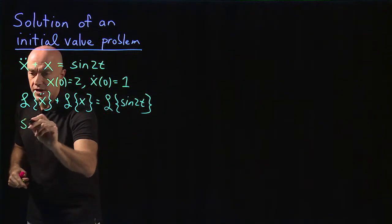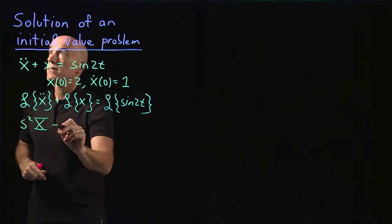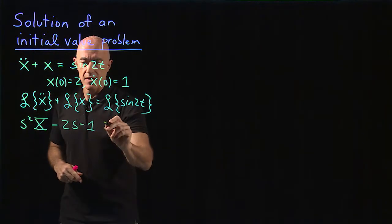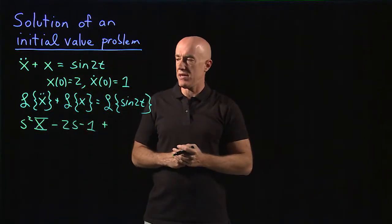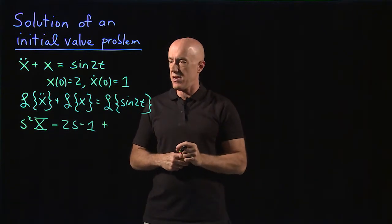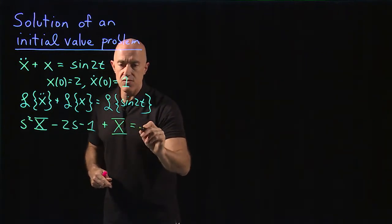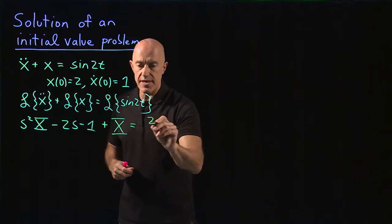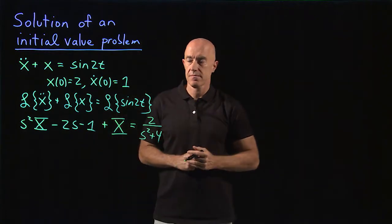We have s squared capital X minus 2s minus 1. There is no first derivative in this equation — in a general equation you would have a first derivative, but here there is none. So plus X is equal to the Laplace transform of sine 2t, which from the table is 2 over s squared plus 4.